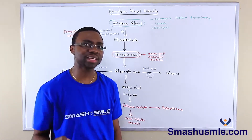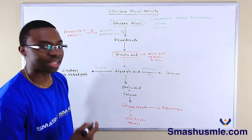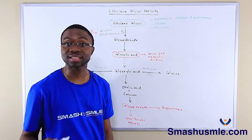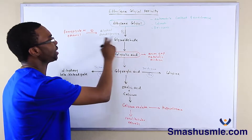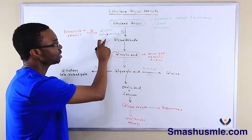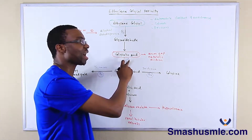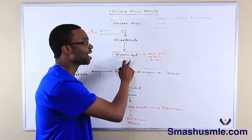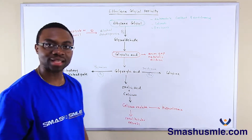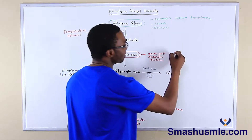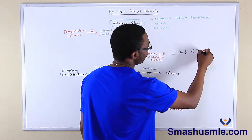In order to understand how ethylene glycol causes metabolic acidosis, let's take a look at the pathway by which ethylene glycol is metabolized in the body. Ethylene glycol is broken down into glycolaldehyde by alcohol dehydrogenase. Once glycolaldehyde is made, the byproduct of that is glycolic acid. Glycolic acid is what actually causes anion gap metabolic acidosis, which means the patient's pH is going to be low — less than 7.3.